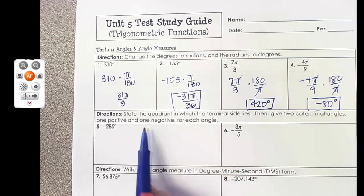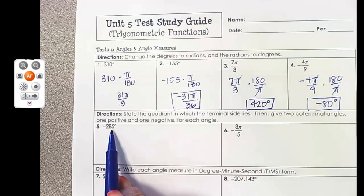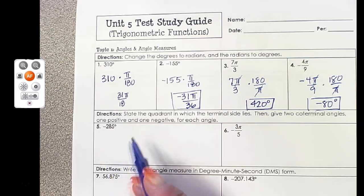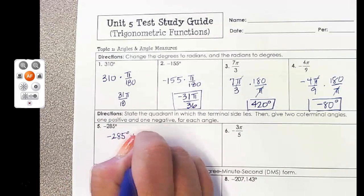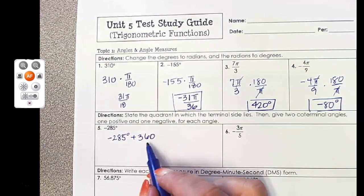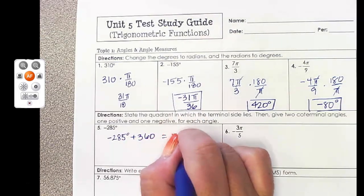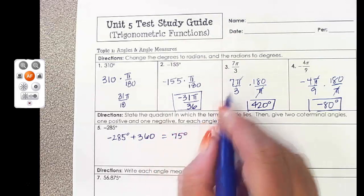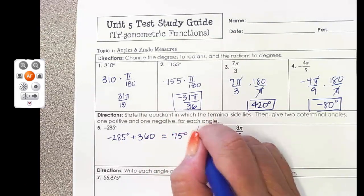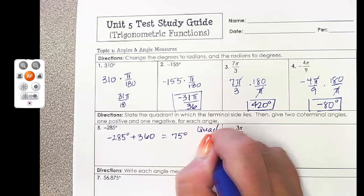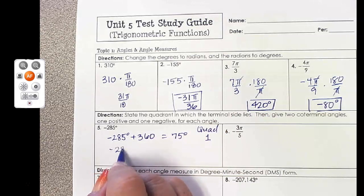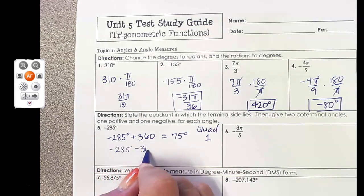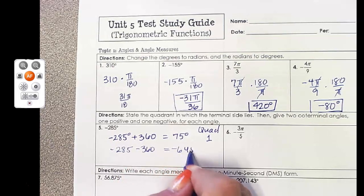Now, when I'm looking at an angle, I want to state the quadrant that it lies in. So I'm going to find a coterminal angle first, because it's easier for me to visualize this angle by knowing what it is as a positive angle. So I'm going to add 360, and I get 75 degrees. I know that everything between 0 and 90 is in quadrant 1. And then to find one more coterminal angle with it, I'm going to go negative 285 minus 360, and I get negative 645.